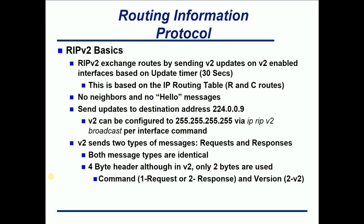RIP version 2 exchanges routes by sending version 2 updates. By default, RIP version 2 only sends version 2 updates on version 2 enabled interfaces, and by default that's every 30 seconds. This is based on the IP routing table — all R routes and all C routes enabled for RIP version 2 will be sent out. No hello messages. Updates are always sent to 224.0.0.9. However, if multicast is not allowed, you can send updates to the version 1 address, which is the broadcast address 255.255.255.255.